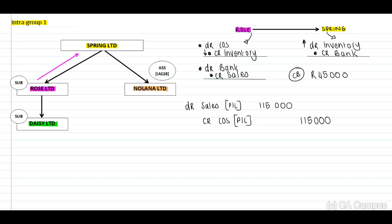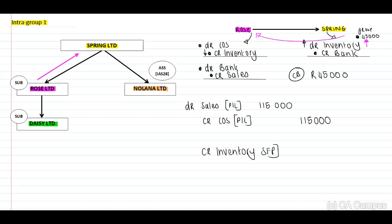We need to eliminate the unrealized profit still included in the closing balance of the inventory. We have inventory in the group to the value of 45,000 not yet sold to a third party outside the group. On this 45,000 there is profit recognized in the records of Rose. This inventory is overstated in our group with a profit portion because Rose and Spring are technically now one. To recognize the unrealized profit, we need to decrease our inventory — credit the inventory on the statement of financial position, which is in the records of Spring — and debit our cost of sales in profit or loss.